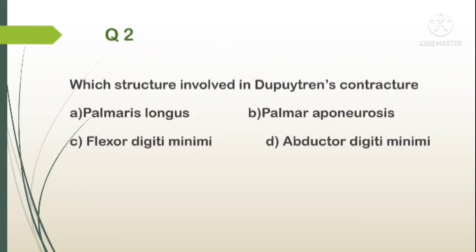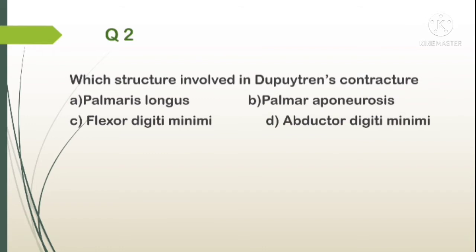Question number 2. Which structure is involved in Dupuytren's contracture? A. Palmaris longus, B. Palmar aponeurosis, C. Flexor digiti minimi, D. Abductor digiti minimi. Answer: B. Palmar aponeurosis — on the medial aspect of the palm, the contracture is produced.